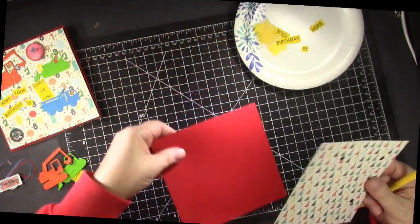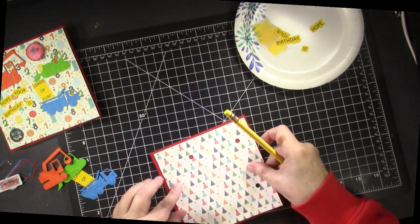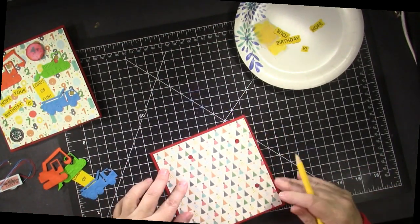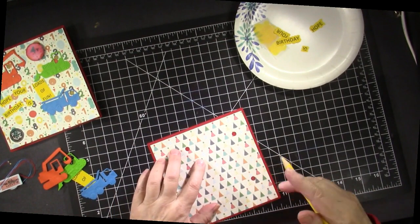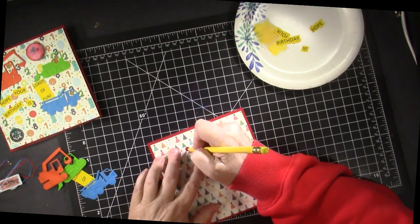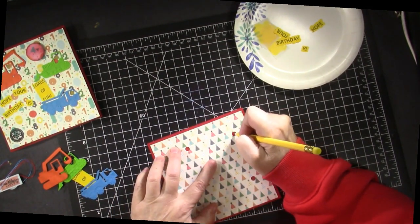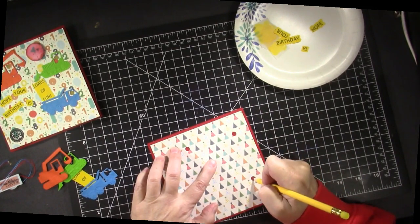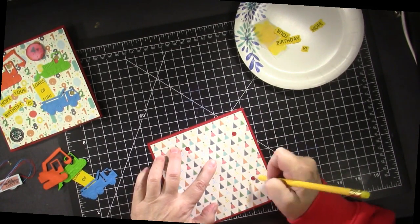And then we're going to lay this on the card front and we're going to mark the center of those holes and that is where the lights are going to be attached.